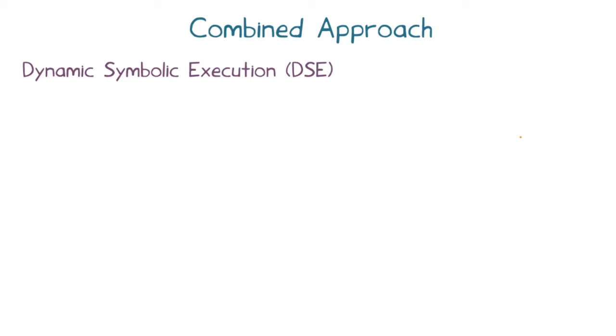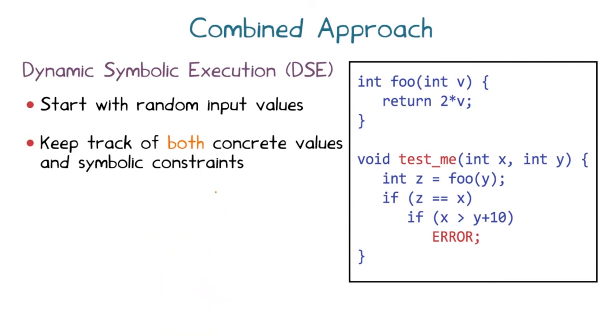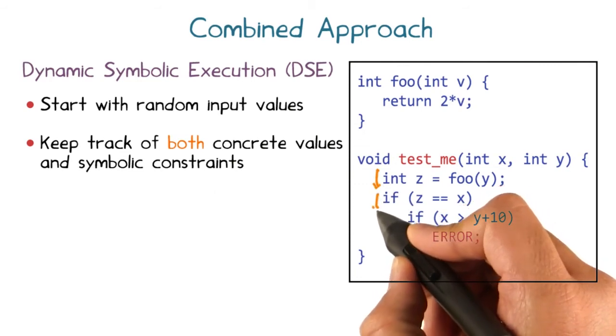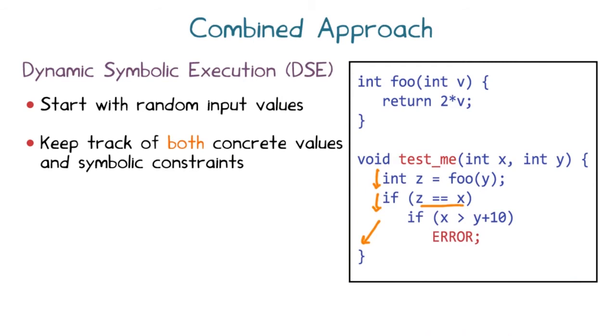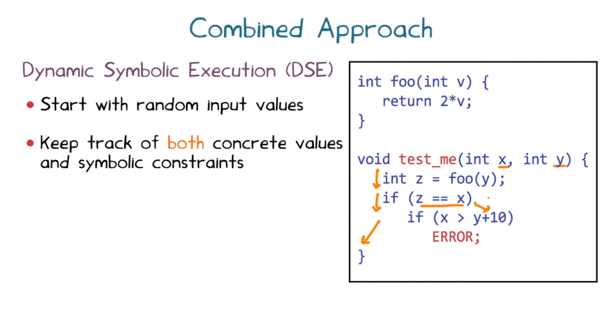A common theme is to combine two approaches to get the benefits of both without suffering from the limitations of either. We will combine the concrete execution of random testing with the symbolic execution approach — this is called dynamic symbolic execution, or DSE. DSE initially sets input values randomly and observes which branches are taken. It also tracks constraints symbolically. Upon reaching the end of a path, DSE backtracks to a branch point and determines whether a satisfying assignment allows the other branch to be taken. If so, the solver generates that assignment and DSE continues; if not, that branch is ignored as dead code.